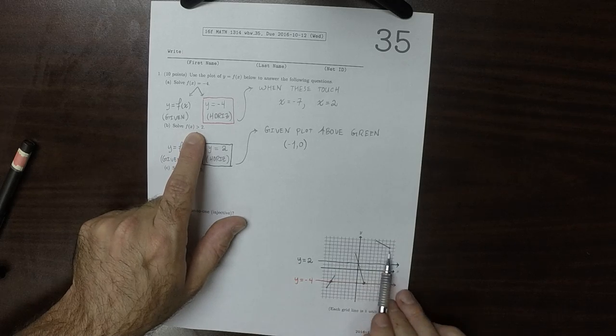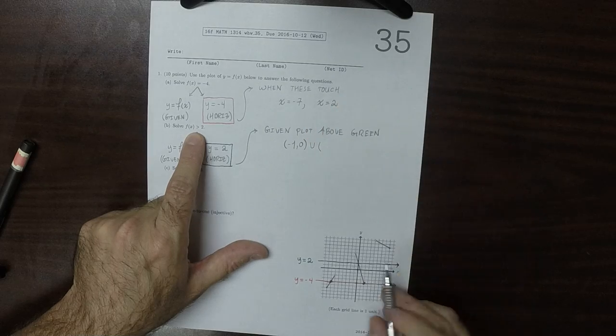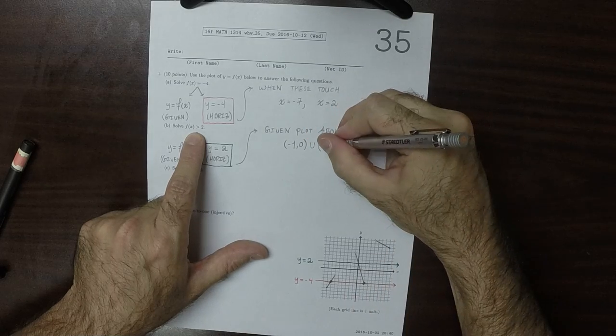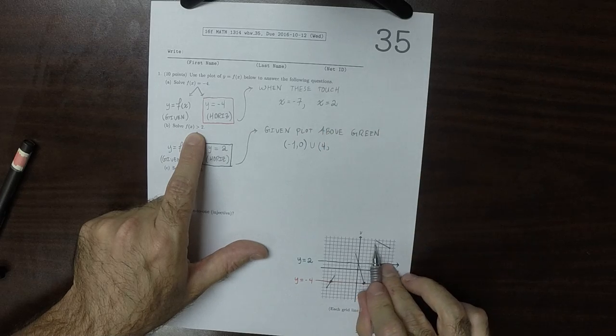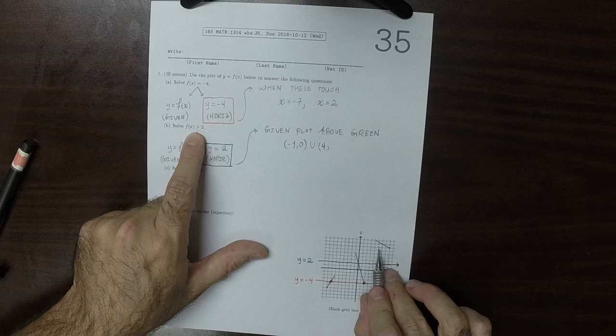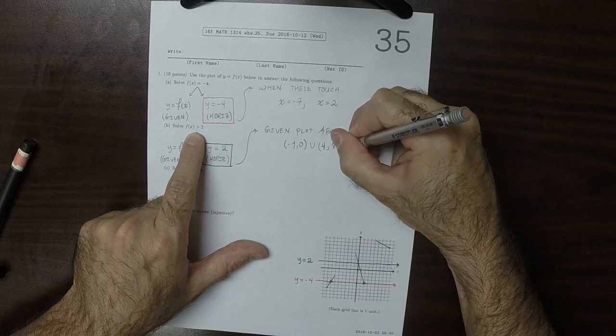And then this whole piece is above. So that would be union. x is 4. We can't include 4 because it's open. And then to 5, 6, 7, 8 to 8. And we do include 8 because it's closed.